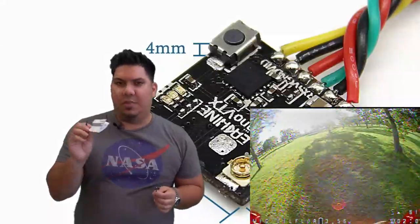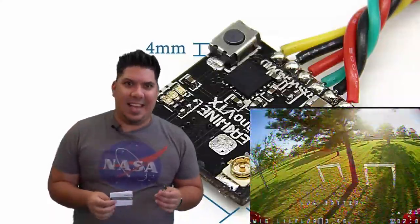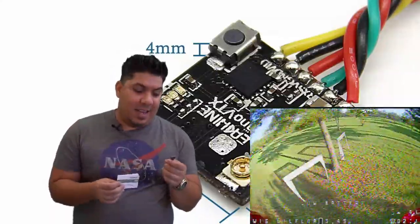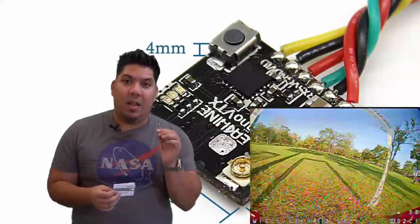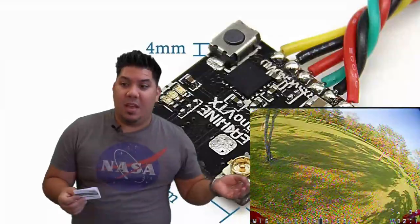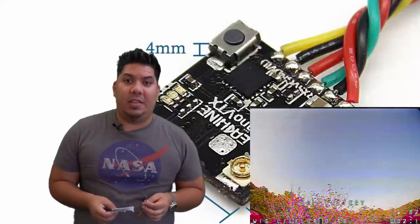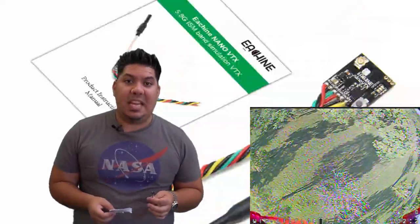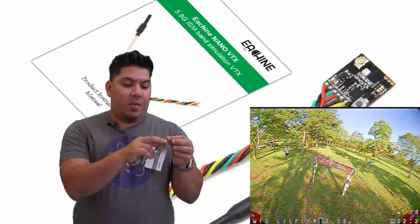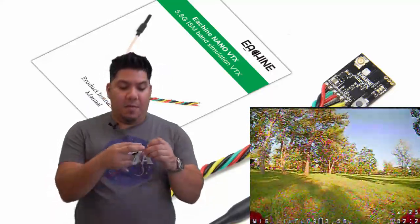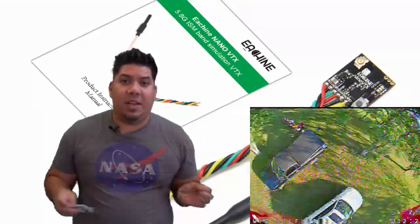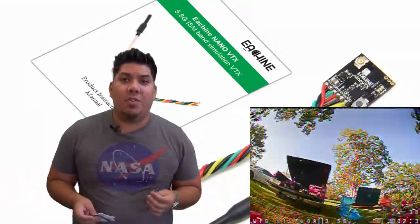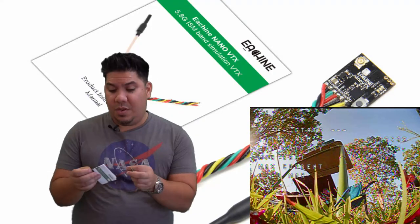It is absolutely great and outstanding. And I cannot believe that these things are getting smaller and smaller and cheaper. At the making of this video, you can get these for under 15 bucks a piece. The wires are already soldered on there for you, meaning that all you have to do is solder onto your flight controller and you're good to go.